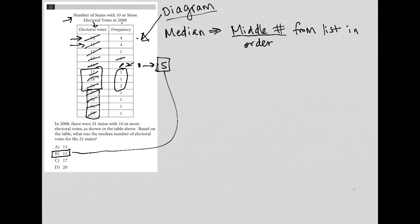If this faster crossing-out method doesn't fully make sense, go ahead and list everything out — it doesn't take a lot of time. But once you understand how the table, frequency, and the data all work well together, the method of crossing out directly on the table will begin to make more and more sense.